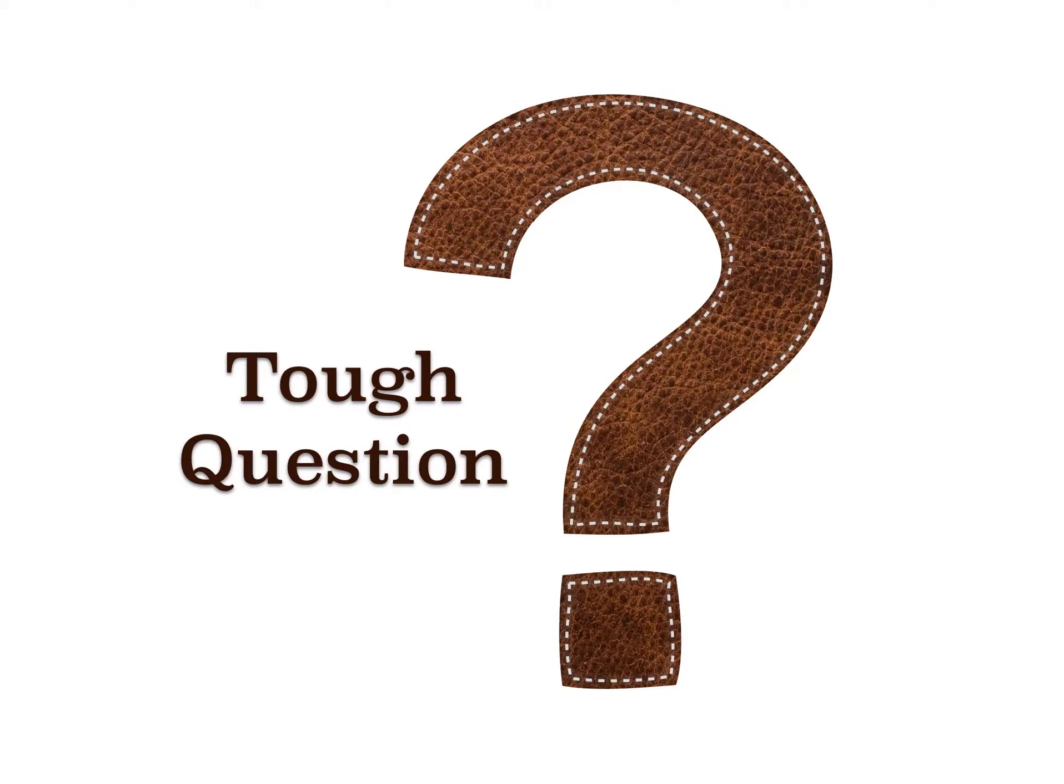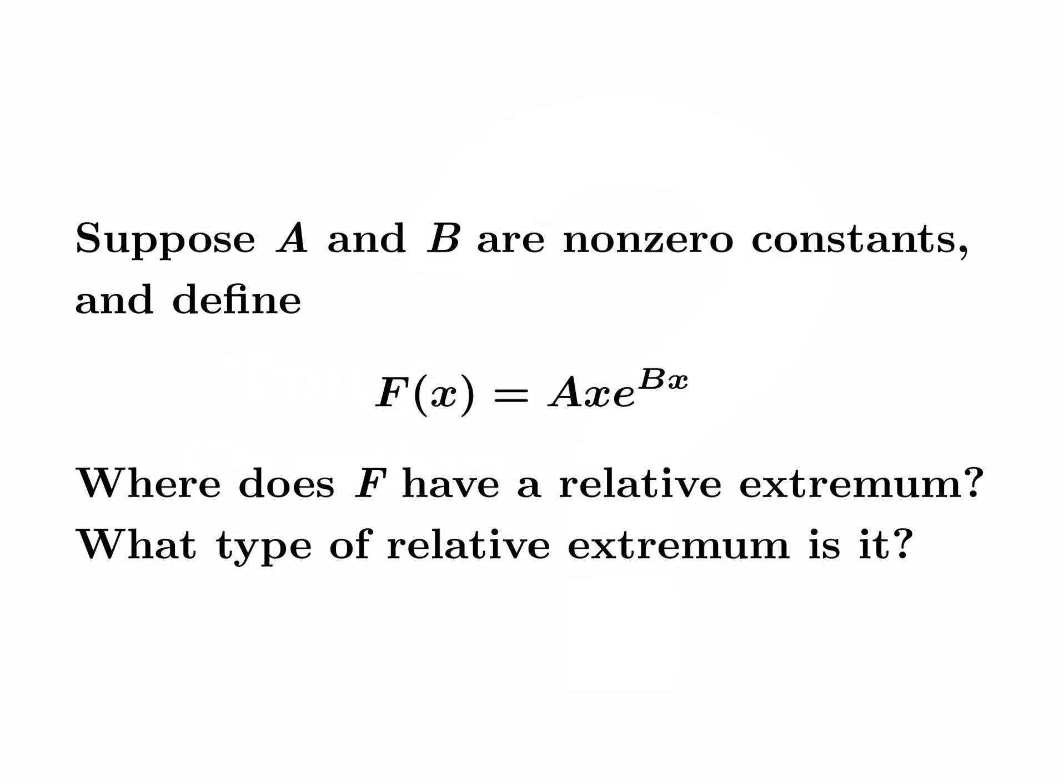Let's look at a tough question and figure out how to solve it. Suppose we have nonzero constants A and B, and we define a function f by setting f(x) equal to Ax·e^(Bx). Where does f have a relative extremum, and what type of relative extremum is it?